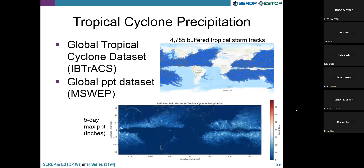I wanted to highlight an indicator that does not rely on climate model output and uniquely does not rely on any future model data. For the tropical cyclone precipitation indicator, we're relying on historical datasets — based on a discussion with our DoD partners and a decision that authoritative future datasets for this indicator are not available. We combined two historical datasets: the Best Tracks dataset alongside a global historical precipitation dataset to calculate this particular indicator. This illustrates that we're not only working with CMIP-based data; in cases where future data is unavailable, we also leverage historical datasets.